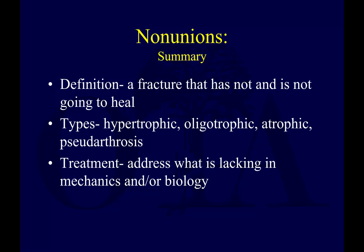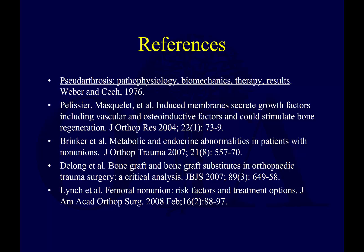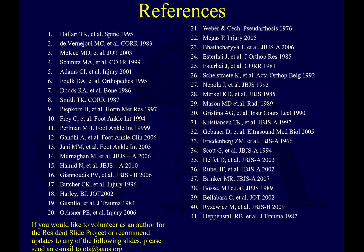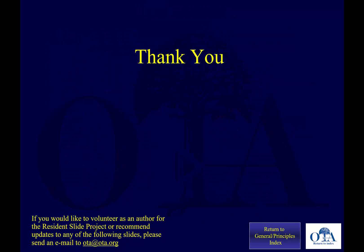In summary, non-unions are fractures that have not and will not heal. There are hypertrophic, oligotrophic, atrophic, and pseudoarthrosis types. Treatment needs to address what's lacking in mechanics or in biology. Thank you.